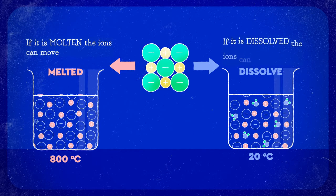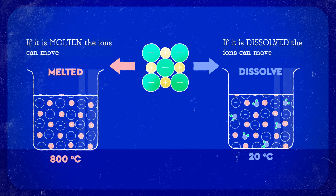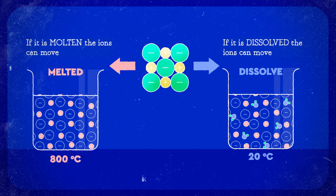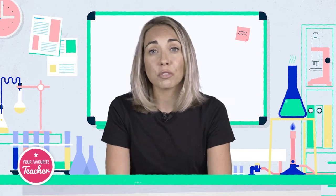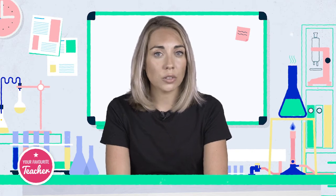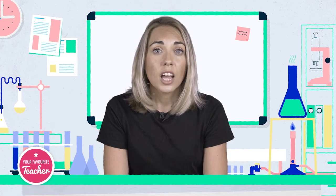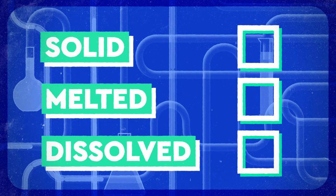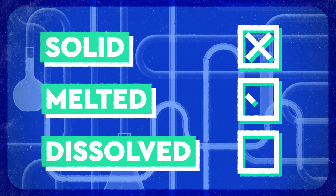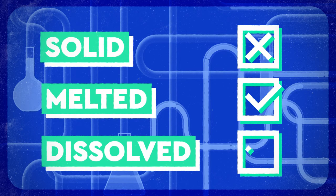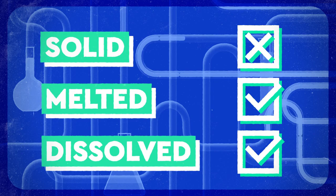The ions still have a charge but they are free to move around in the solution. When melted, the ions in an ionic compound are also able to move freely. In a solid ionic compound, the ions are held tightly by the electrostatic forces and are in fixed positions in the giant lattice structure. For electricity to flow, the ions must be able to move. If you want to conduct electricity, a solid ionic compound is just not going to cut it. You need a melted ionic compound or a dissolved ionic compound so that the ions are free to move.